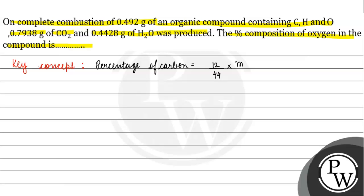Now we multiply M2, which is mass of carbon dioxide, by M, mass of organic compound, into 100. Now let's solve this question. M2, the mass of carbon dioxide given, is 0.7938 gram. And the mass of organic compound M is...